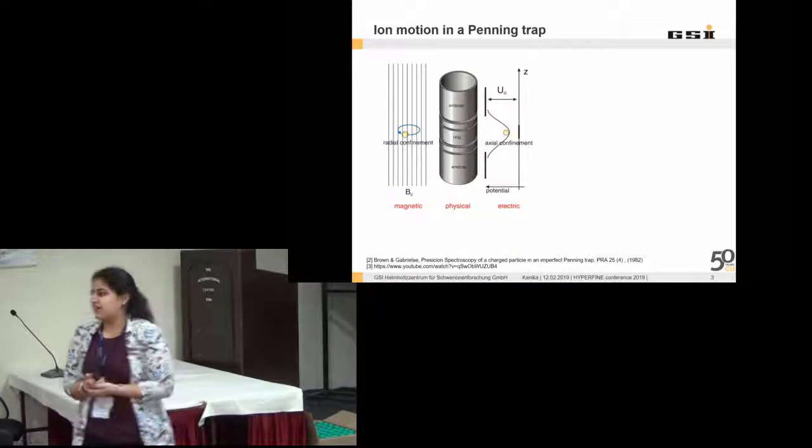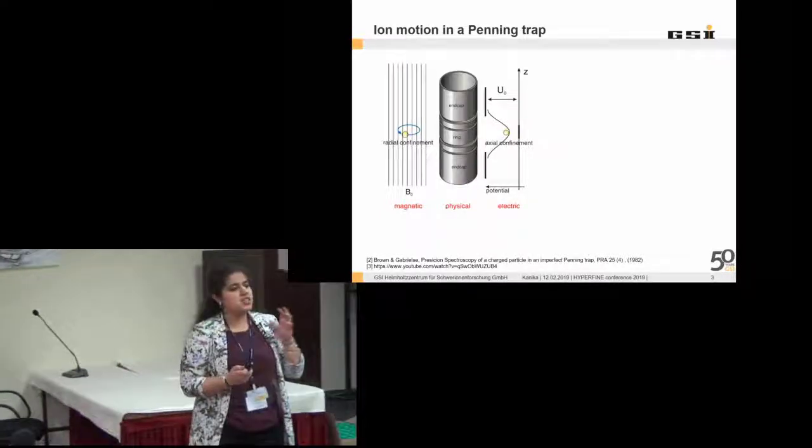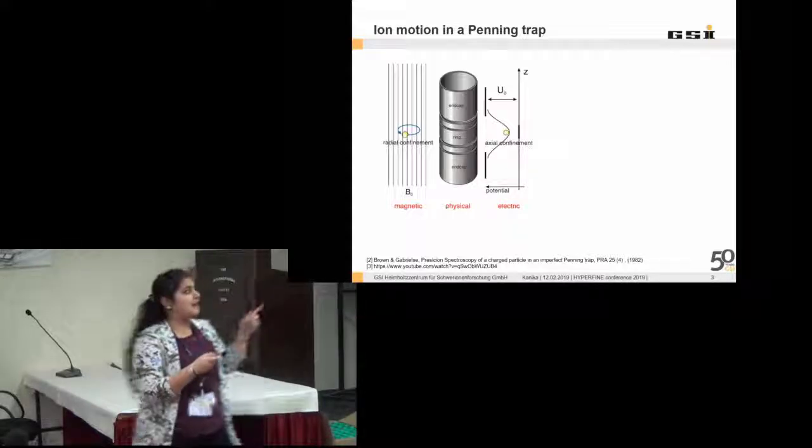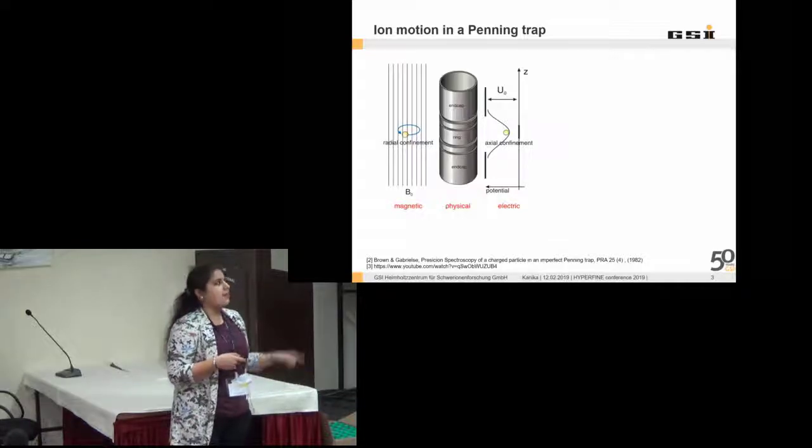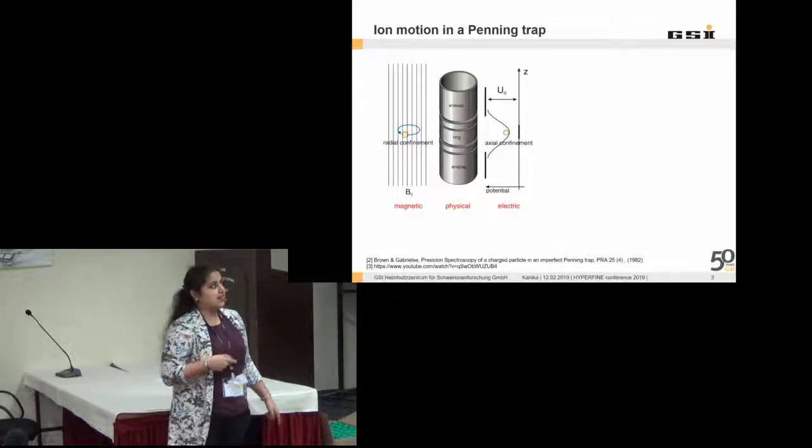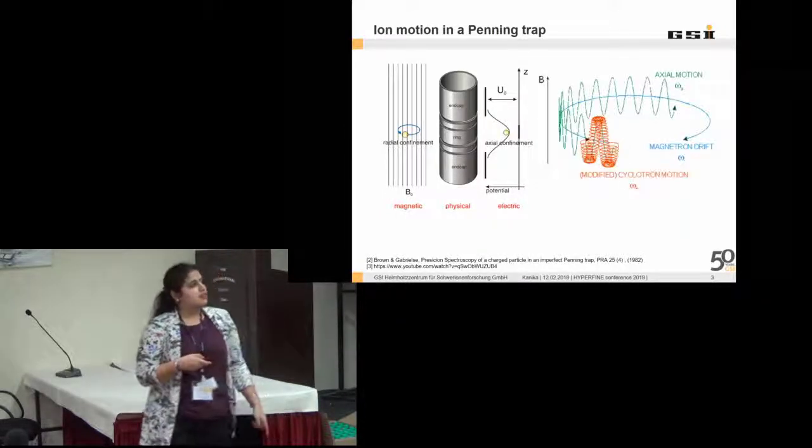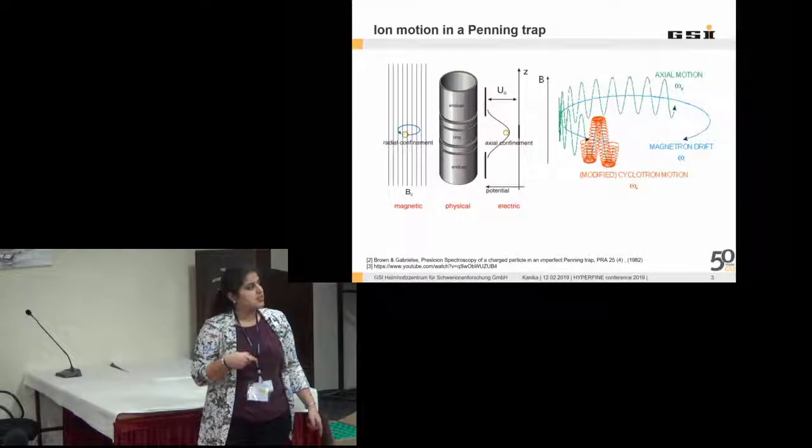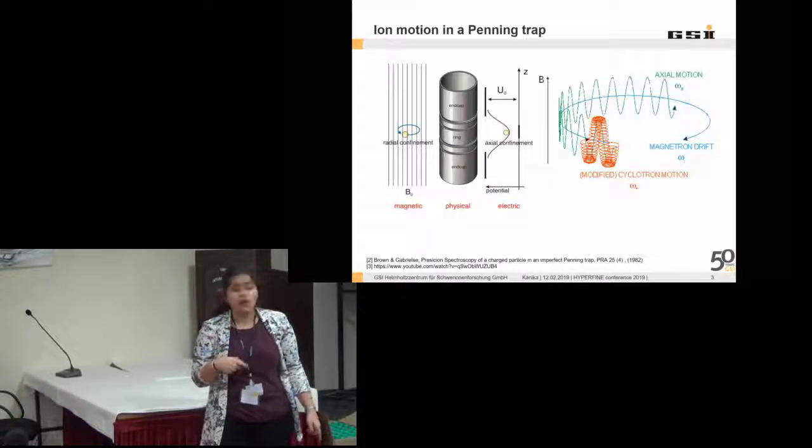In a Penning trap, as I mentioned, we have the electric field as well as the magnetic field. When an ion is present in an electric field, it will have an axial oscillation because the electric field will confine the particle axially, whereas in a magnetic field which is along the axial direction, the radial confinement of the ion will be there.